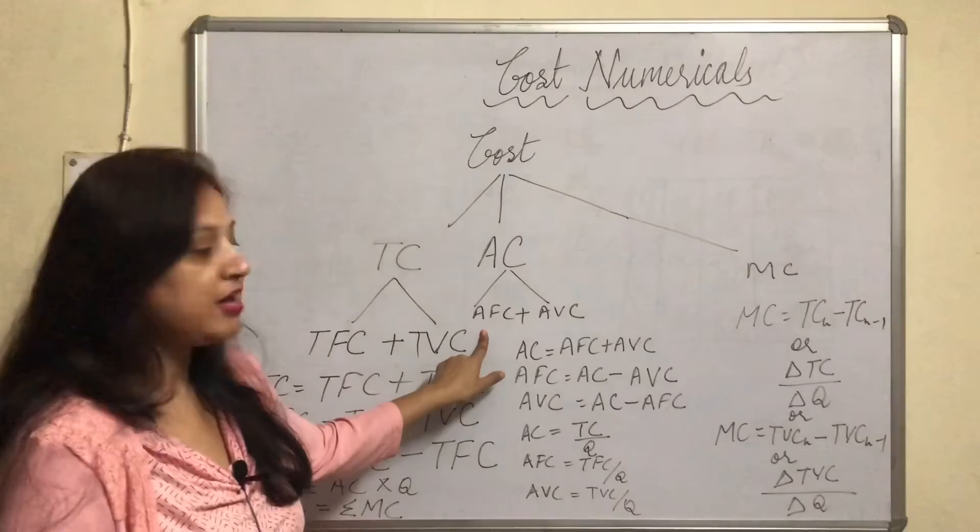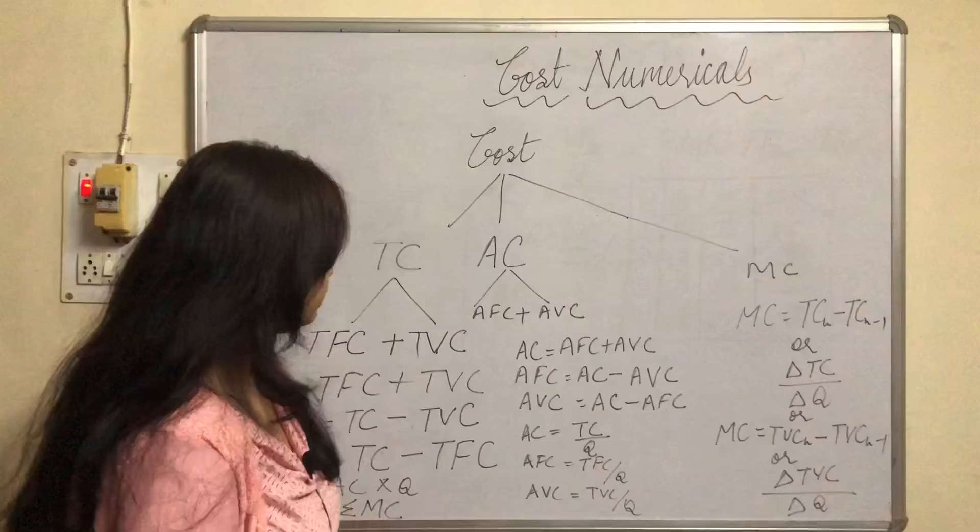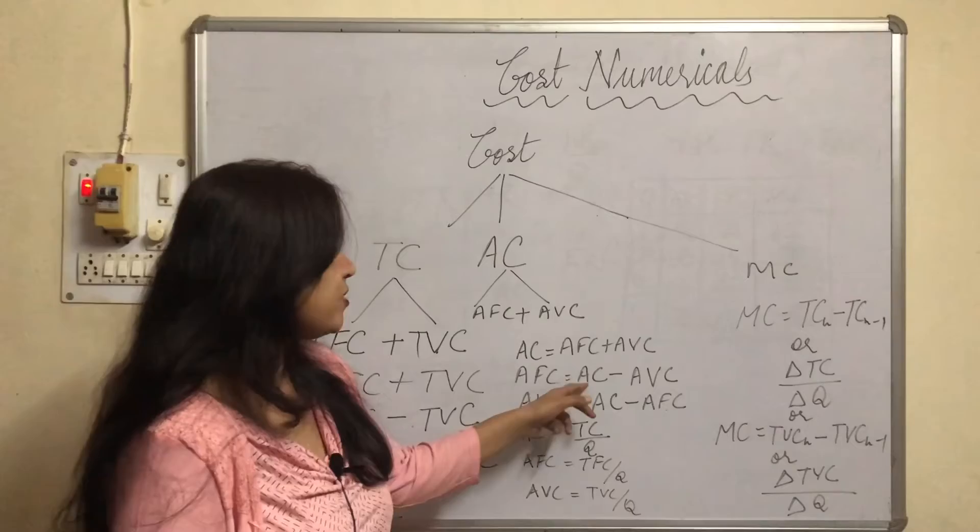Let's come to AC. AC is also having two types of cost: average fixed cost and average variable cost. So we can have formula here also: AC equals AFC plus AVC. And if you want to find AFC or AVC,